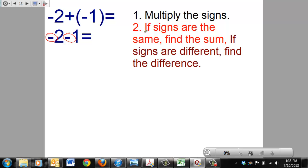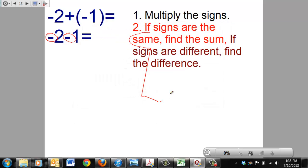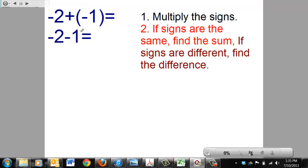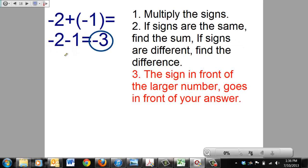Therefore looking at this our signs are going to meet the same category. Our signs are the same so we're going to find the sum. What's the sum of 2 and 1? Well the sum of 2 and 1 is going to be 3. So we're going to put that 3 in there. And then next the sign in front of the largest number goes in front of your answer. Which number is larger, a 2 or a 1? Remember we're not looking at the signs, I just care about the absolute value of the numbers. 2 is. What's in front of that 2? A negative sign. Therefore we're going to put a negative in front of our answer giving us a negative 3 for our solution.